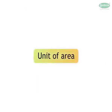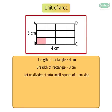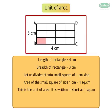What is the unit of area? The length of a rectangle is equal to 4 cm and the breadth is equal to 3 cm. To find the area, let us cut off small squares of side 1 cm. The area of a small square of side 1 cm is equal to 1 cm². Therefore, the unit of area is equal to 1 cm².